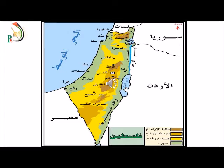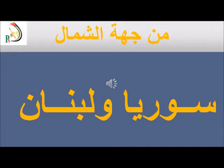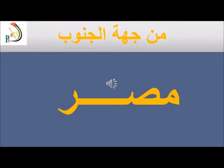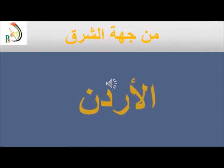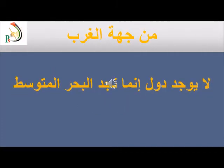شاهدوا معي أعزائي الطلاب خريطة فلسطين وتعالوا نتعرف على الدول القريبة منها من جهة الشرق والغرب والشمال والجنوب. وجدنا أن الدول القريبة من فلسطين من جهة الشمال هي سوريا ولبنان، ومصر من جهة الجنوب، والأردن من جهة الشرق. أما من جهة الغرب فلا توجد دول، إنما البحر المتوسط.